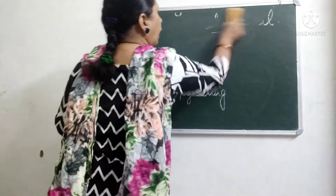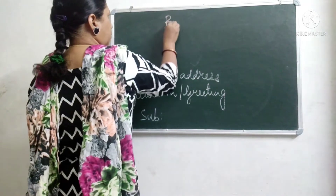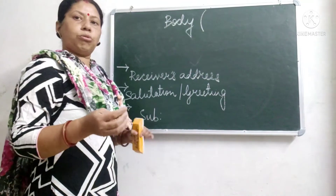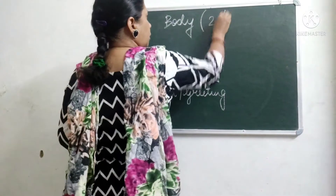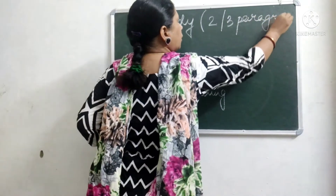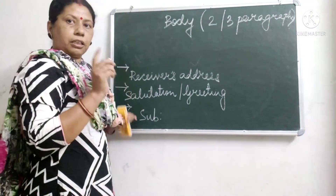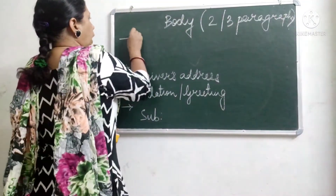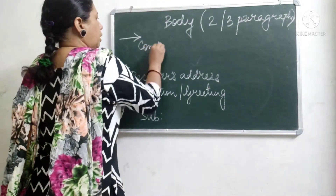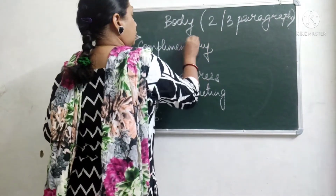After that you have the body of the letter. The body should be at least two to three paragraphs, you can have more. Then after finishing writing the body of the letter, you leave a line.